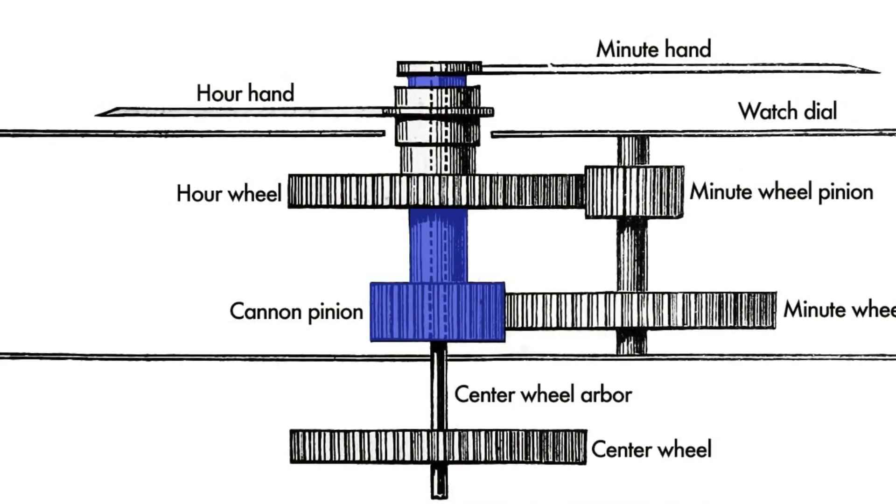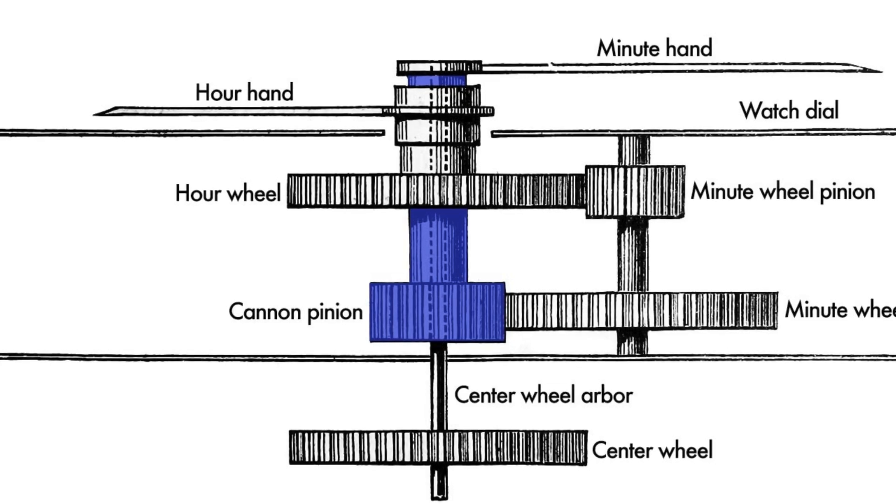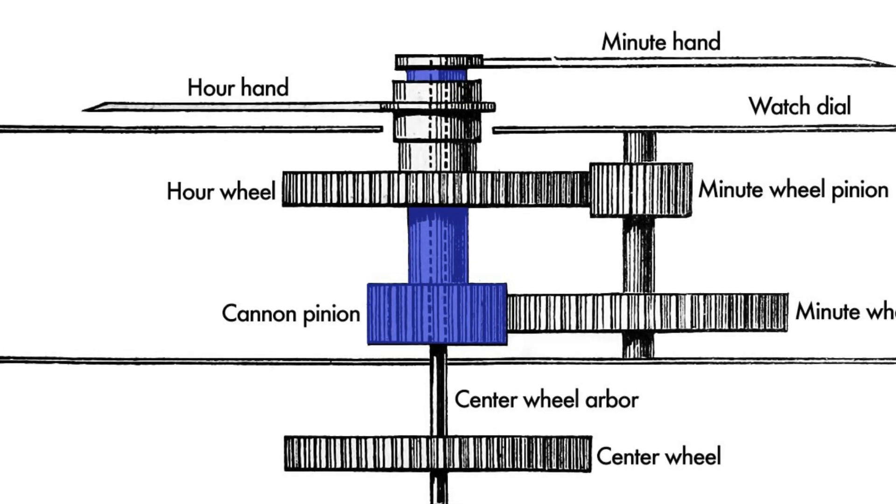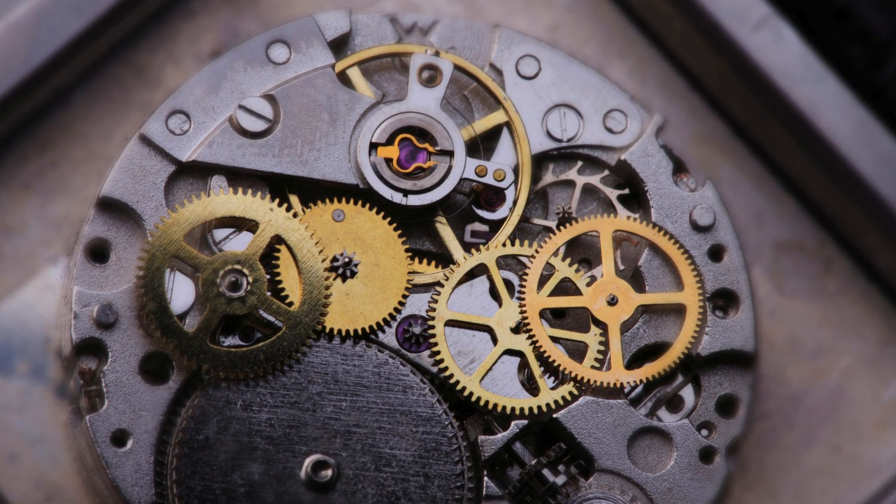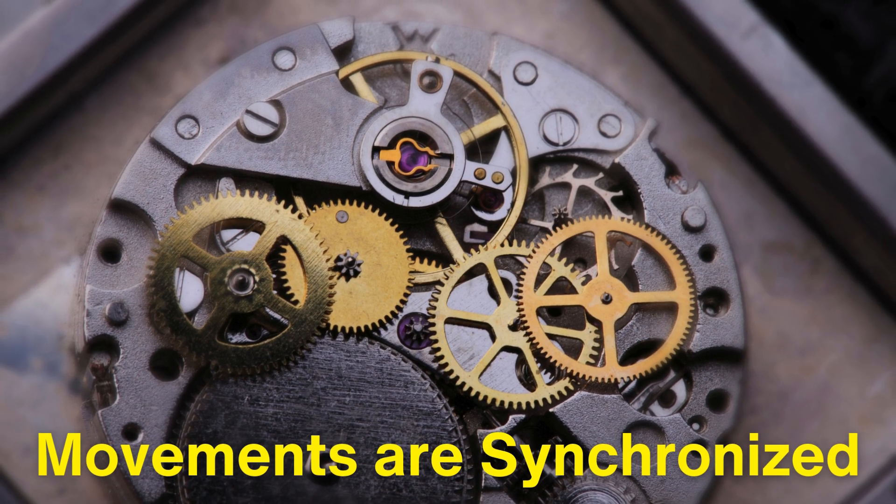For instance, the gear attached to the seconds hand rotates once every 60 seconds, while the minute hand advances one position for every full rotation of the seconds hand. Similarly, the hour hand moves at one-twelfth the speed of the minute hand. The gear train is precisely engineered to ensure that these movements are synchronized, allowing the watch to keep accurate time.